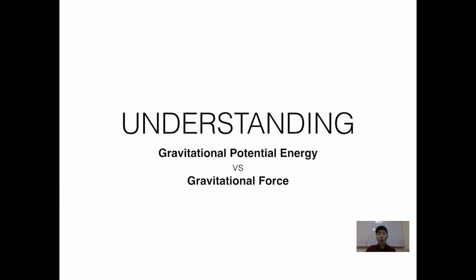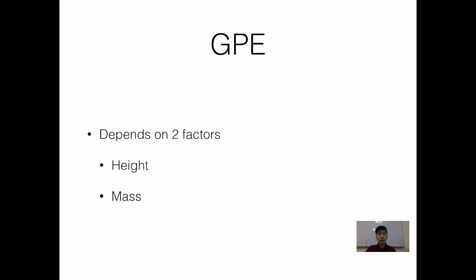When we talk about gravitational potential energy, the first difference is that one is an energy and the other is a force. Gravitational potential energy depends on two factors: one is the height, the other is the mass. If we are at a greater height from the ground we'll have more gravitational potential energy. Likewise, if we have a larger mass we'll have more gravitational potential energy.